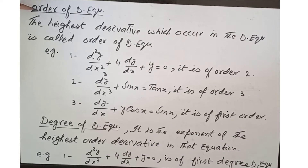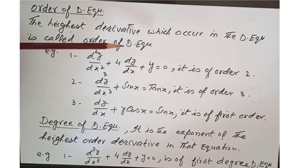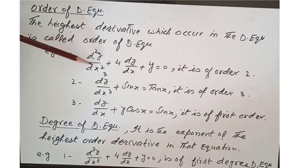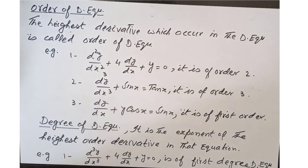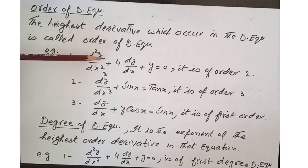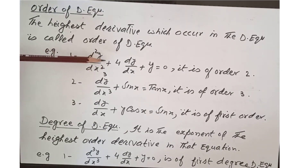Now we look at the order of a differential equation. The highest derivative which occurs in the differential equation is called the order of the differential equation. For example, d²y over dx² plus 4 dy over dx plus y equals 0 is of order 2, because the highest order derivative present is the second order derivative.